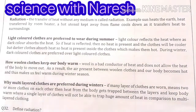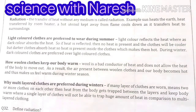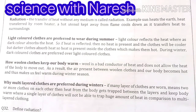Our Earth gets heated and there is no medium involved, so it is heated with the help of the radiation mode. Heat transferred by a room heater — when we use a room heater, the whole room gets heated and there is also no medium, so the heat transfer takes place by radiation.